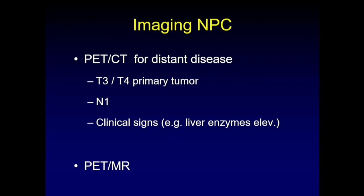PET-CT is not necessarily useful for imaging the primary tumor — CT and MRI adequately handle nodal disease. PET-CT is reserved for detecting distant disease, used when a patient has a T3 or T4 primary tumor, any nodal disease (even N1 predisposes to distant disease), or clinical signs of distant disease such as elevated liver enzymes suggesting hepatic metastases. If a PET-MR scanner is available, it allows a combined skull base MRI and full-body MRI with PET in one examination.